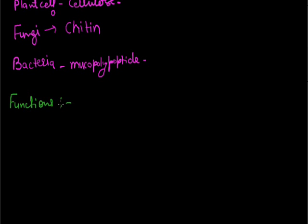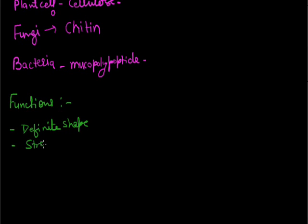Now the functions of the cell wall: first, it provides the definite shape of the plant body. Second, it provides mechanical support as well as strength to the cell. It is fully permeable, so it allows all molecules to pass through it, making it a permeable membrane.